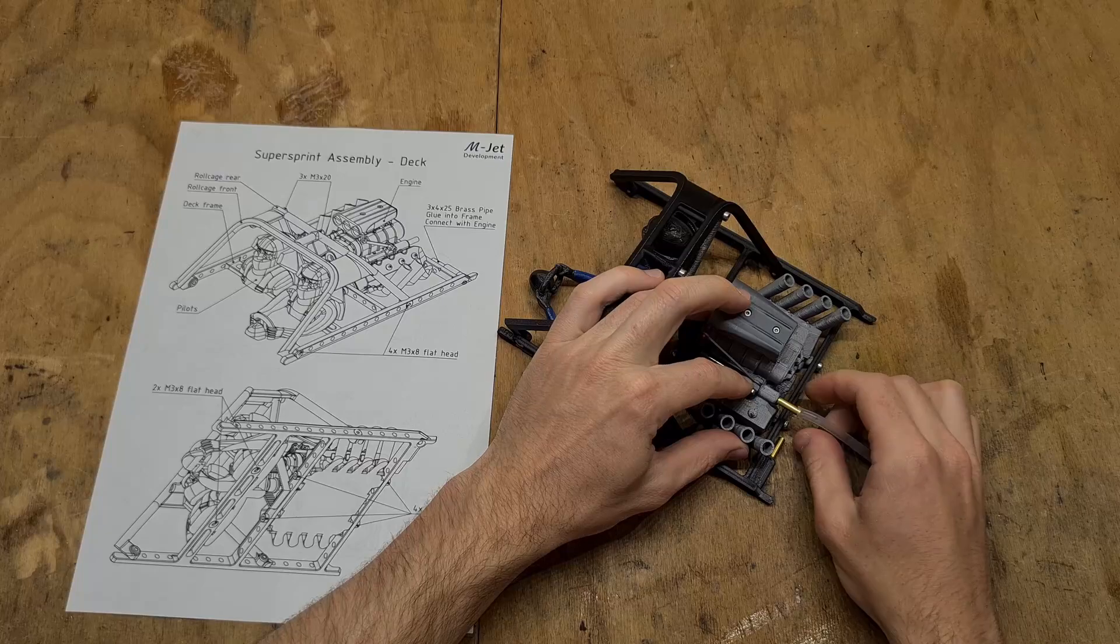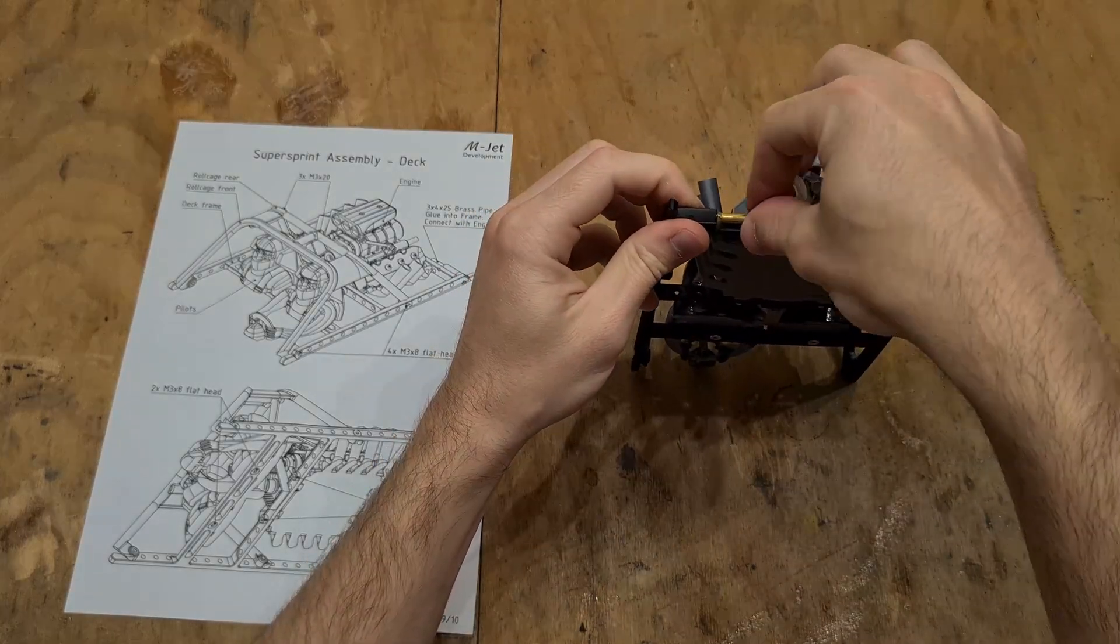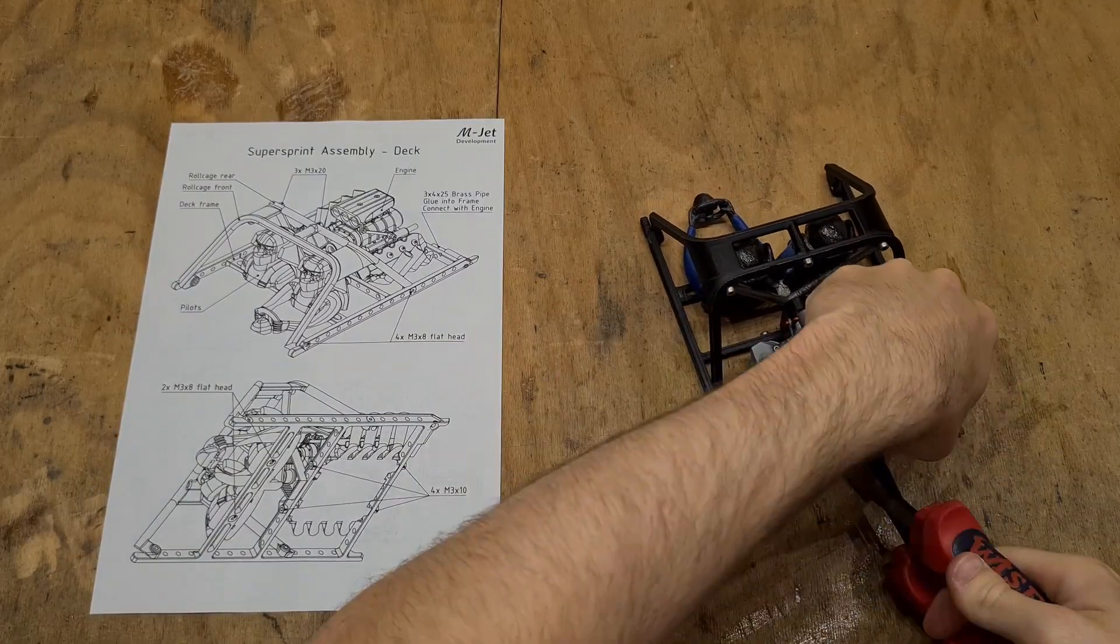The last step is to use a short silicone pipe to connect the brass tubes on the frame and the engine. I also recommend using zip ties to make sure that the pipe doesn't blow off.